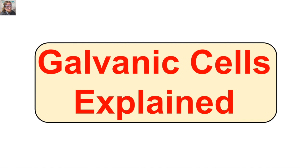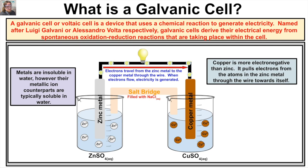Hey, this is Mr. Millings and in this video we are going to learn about galvanic cells, sometimes referred to as voltaic cells. A galvanic cell or voltaic cell is a device that uses a chemical reaction to generate electricity, named after Luigi Galvani or Alessandro Volta respectively. Galvanic cells derive their electrical energy from spontaneous oxidation-reduction reactions taking place within the cell. It's the exchange of electrons that generates the electricity in a galvanic cell.